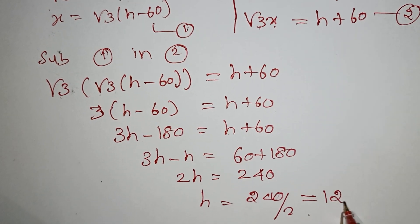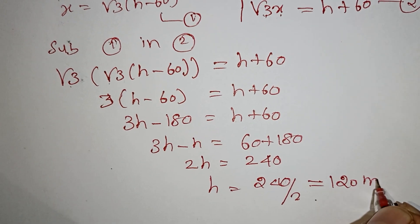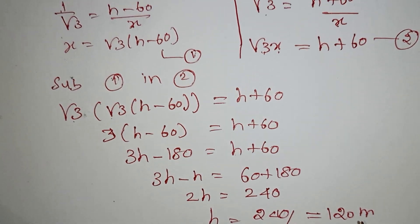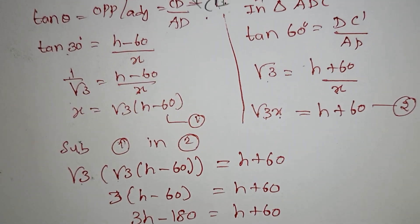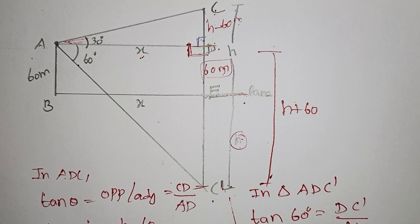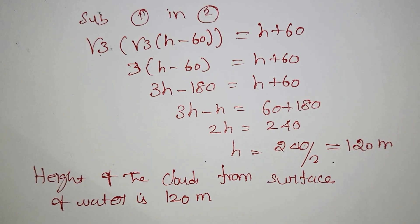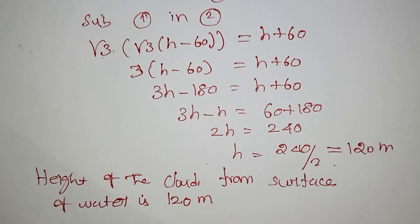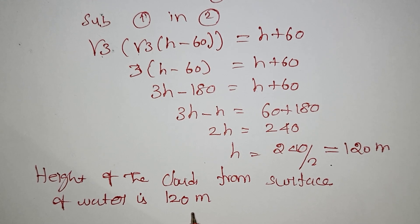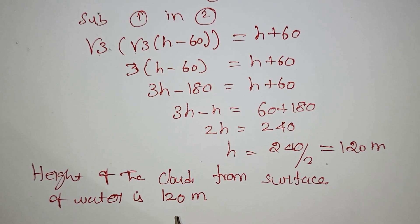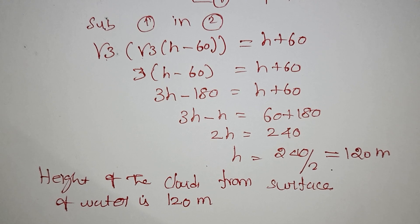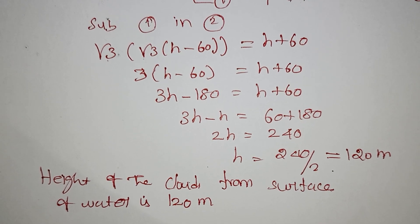H equals 240 divided by 2, which is 120 meters. The height of the cloud from the surface of the water is 120 meters. If the video is useful, please like and share with your friends, and subscribe to our channel for more videos.